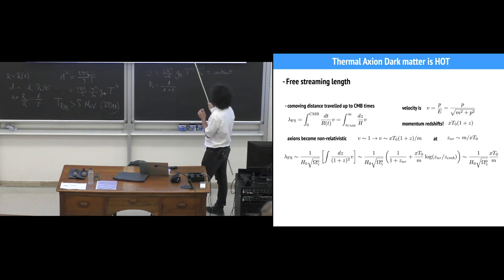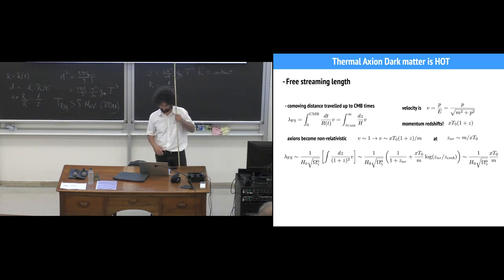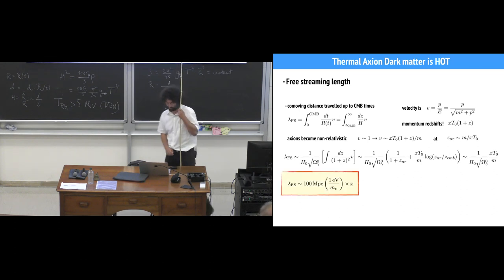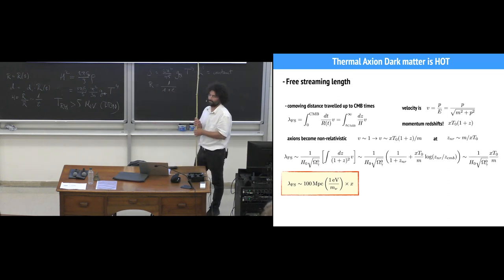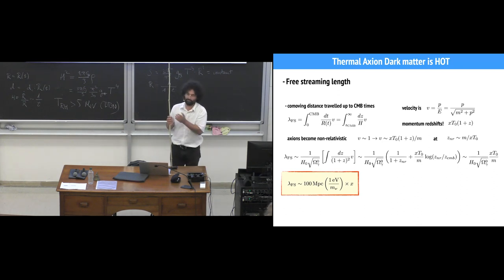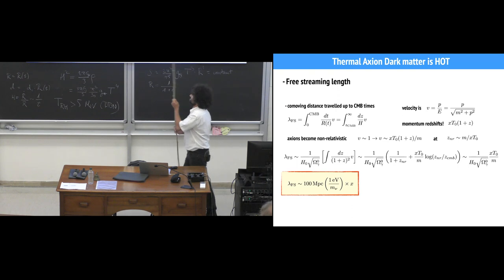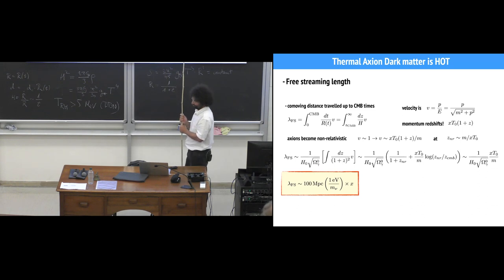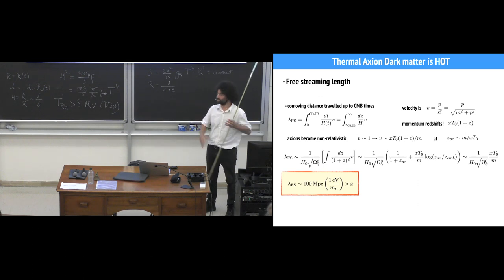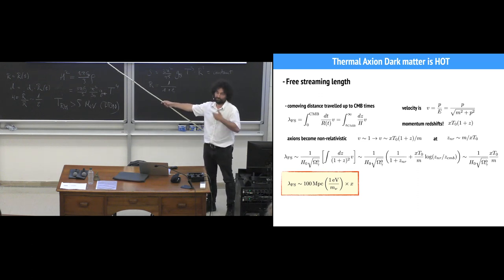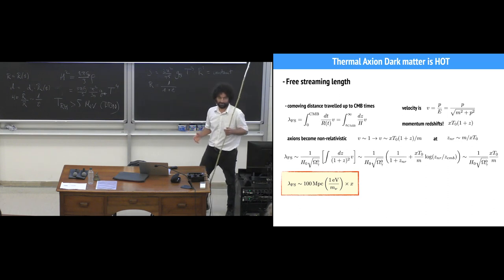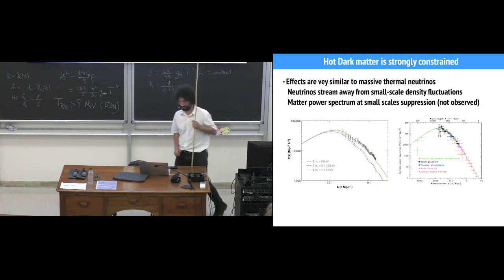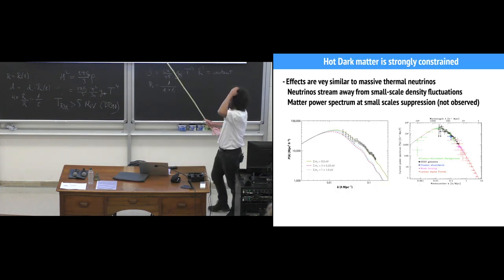This large free streaming length has a very important impact on the structure of the universe. If you look at how galaxies or matter are distributed in the universe, the power spectrum — the Fourier modes of the matter distribution — has a characteristic shape, with a typical scale of order 100 Mpc^-1. If axions are hot dark matter, their free streaming over cosmological distances smooths out inhomogeneities on scales smaller than the free streaming length.